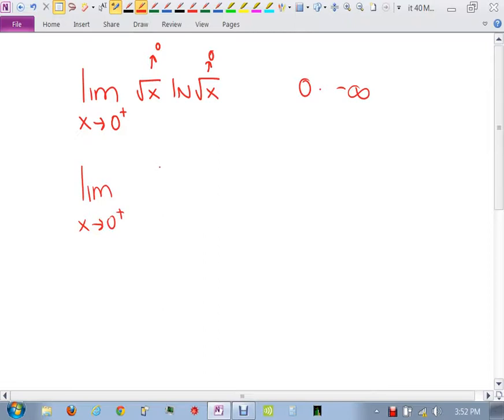Move the square root of x down. Okay. So I should write natural log square root of x over 1 over the square root of x. Now you don't have to check this, but that is going to give you infinity over infinity. You can go straight to L'Hôpital.